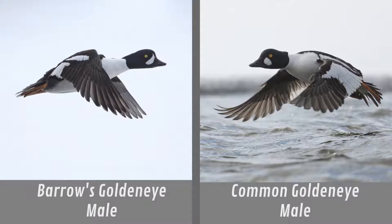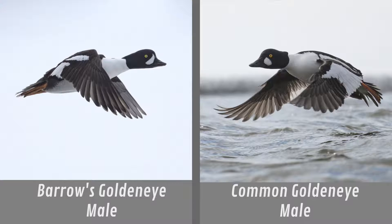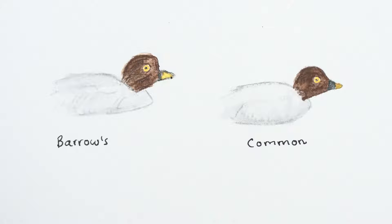However, in Barrow's Goldeneye, the white square has a black stripe in it. The main difference between Common and Barrow's Goldeneye females is that the female Common Goldeneye has a distinct yellow-tipped bill, whereas the breeding Barrow's Goldeneye female has more diffuse yellow all over the bill.